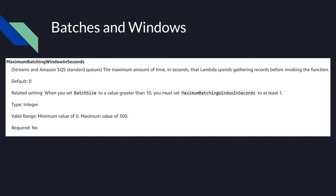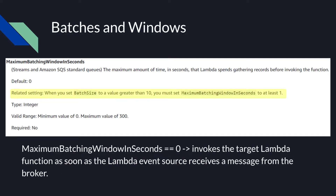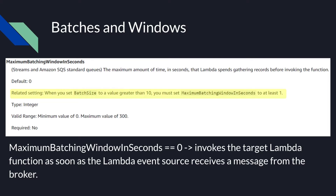To clarify the relation between batch size and maximum batching window in seconds, the AWS documentation states: when you set batch size to a value greater than 10, you must set maximum batching window in seconds to at least 1. If you define the batch size greater than 10 but maximum batching window in seconds equals 0, it won't produce an error, but it will invoke the Lambda function as soon as the event source mapping receives a message — which is not expected behavior and not a good practice.